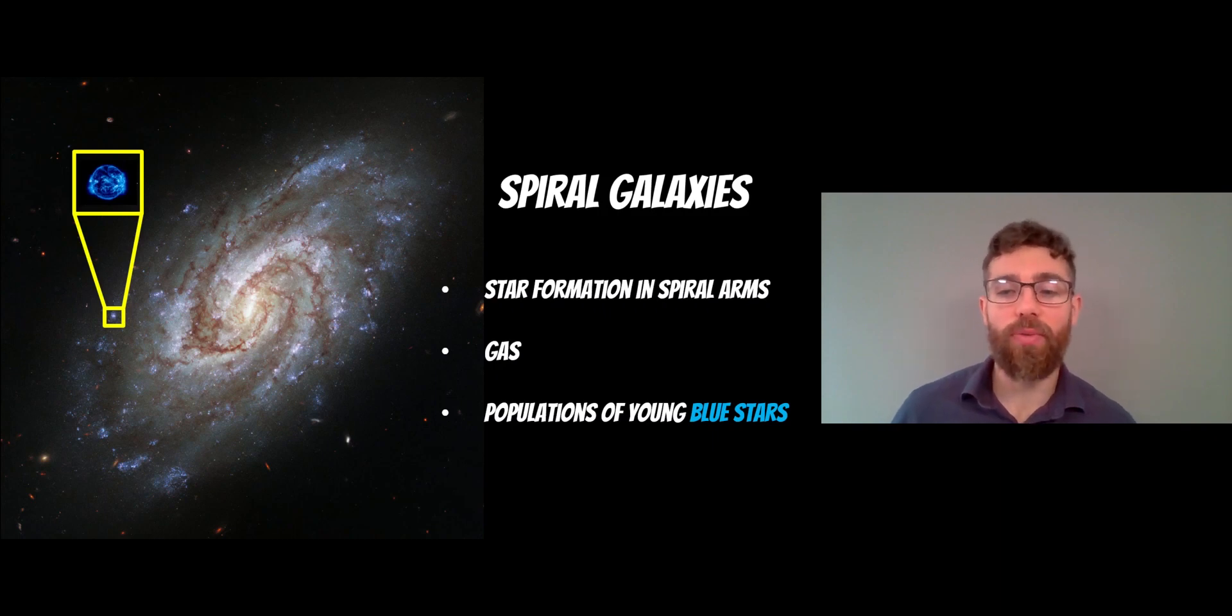The reason why they have lots of young blue stars is that they have gas. So they have star formation, basically. They have recent star formation in order to form these young blue stars. As the spiral galaxies age, though, then the population would get redder and the gas would be depleted.